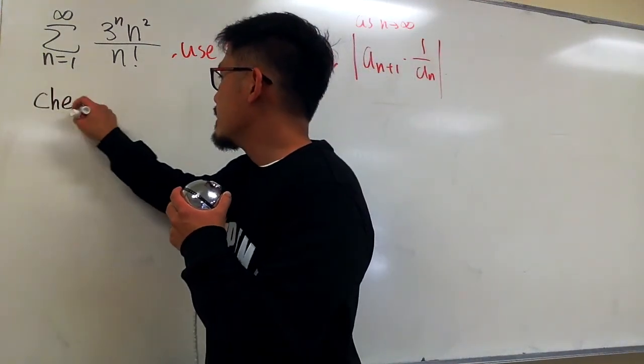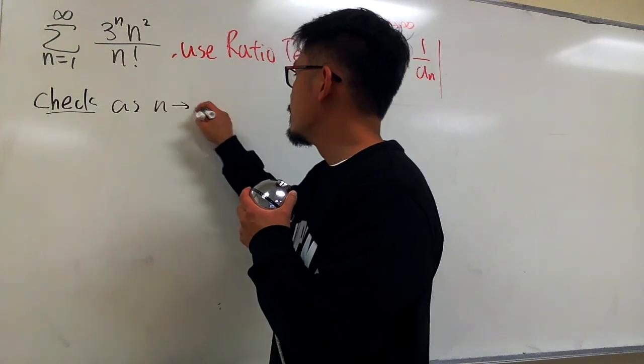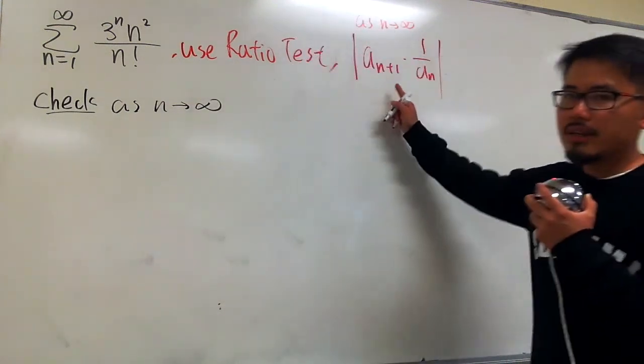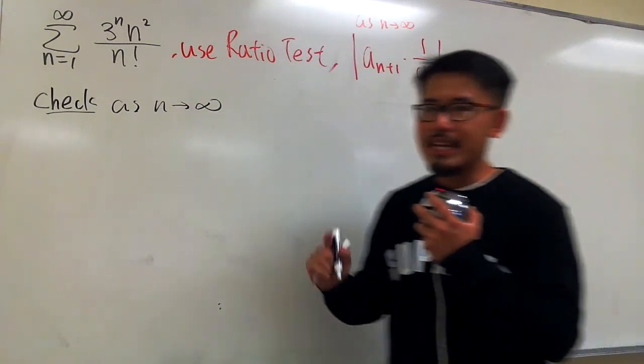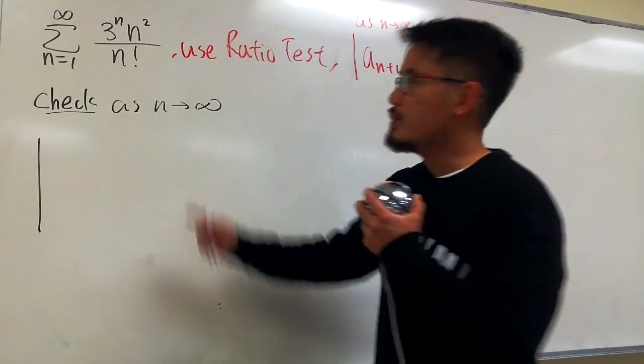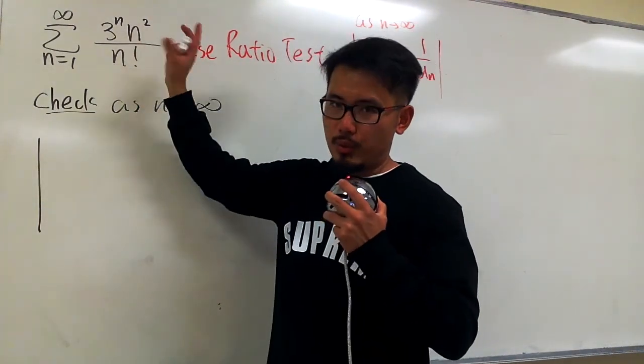We are going to check as n goes to infinity. Let's put down a_(n+1) first, inside of an absolute value. To do that, we look at this, and when we see the n, you replace that with n+1.